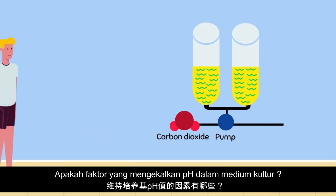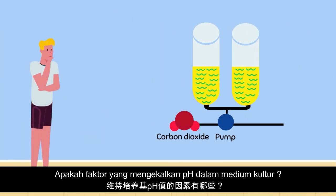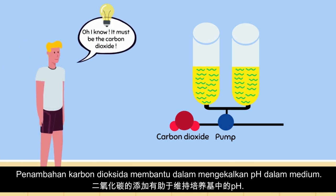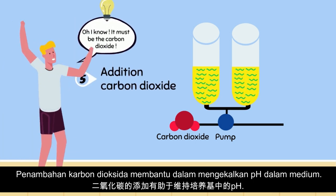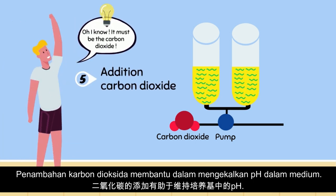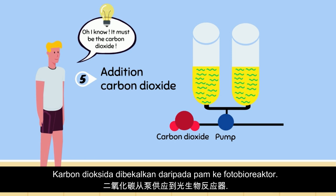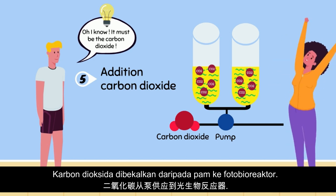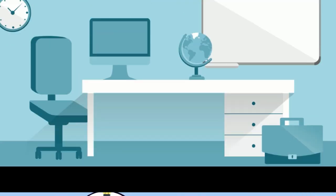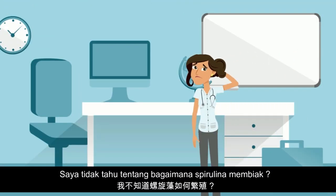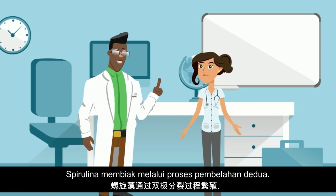Do you know what factor maintains the pH of the culture medium? The addition of carbon dioxide helps in maintaining the pH of the culture medium during the cultivation of spirulina. Carbon dioxide is supplied from a pump to the photobioreactor.